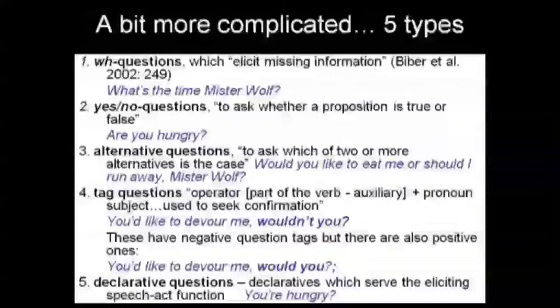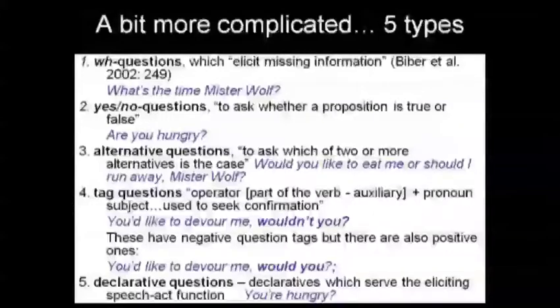Our fourth category is tag questions. Tag questions are where you put a tag at the end of the question with the verb 'to be' and a pronoun — like, 'It's hot in here, isn't it?' Our fifth category is an unusual category to call questions because they're not actually formed as interrogatives: declarative questions. These are statements that perform as questions, and we're going to have a look at whether these occur in the data.